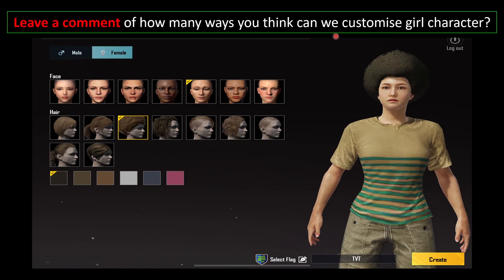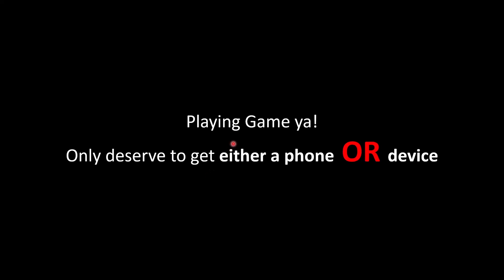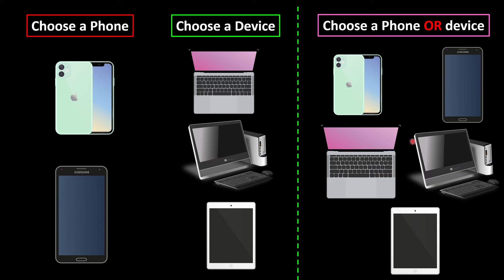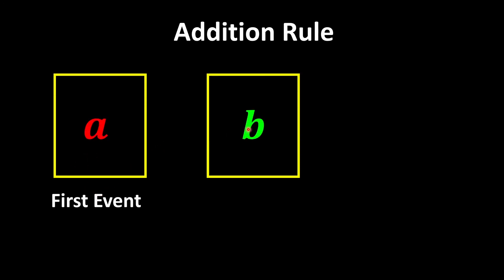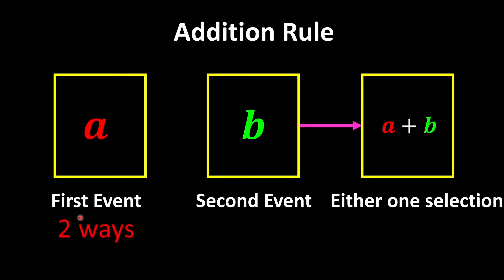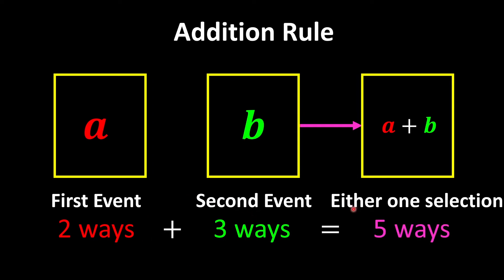Oops — your parents found out you were playing games, so now you only deserve either a phone or a device. If you choose a phone, you can't choose a device anymore, and vice versa. So we're going to combine both choices into one selection. We're left with only five possible ways. Two phone choices plus three device choices gives us five outcomes. This can be explained using the addition rule: if we have 'a' ways in the first event and 'b' ways in the second event, and only one event can happen, then we have a plus b ways.